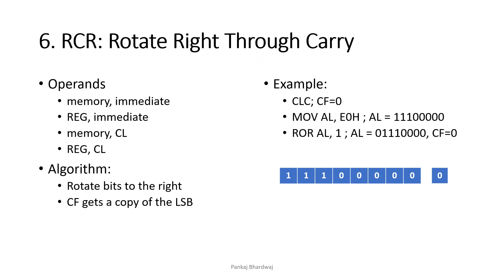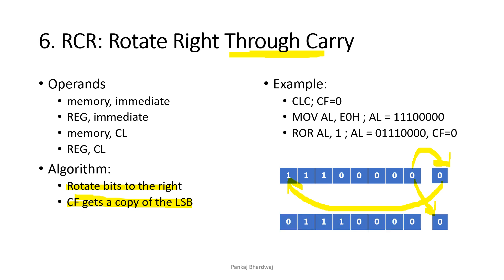Next is RCR — rotate right through carry. We rotate bits to the right and CF gets a copy of the LSB, same as ROR, but here carry is a part of the rotation. The previous carry flag value goes into the MSB. For AL = E0 with CF = 0, the result is 0,1,1,1,0,0,0,0 and carry flag becomes 0.